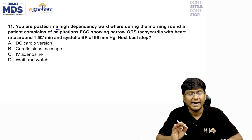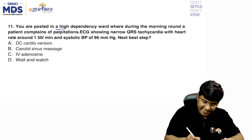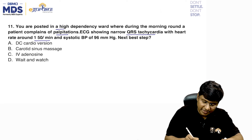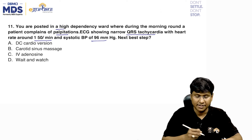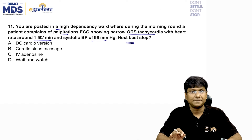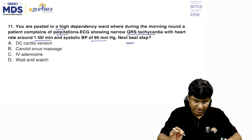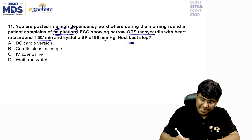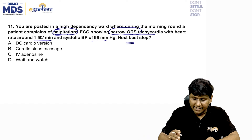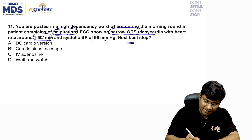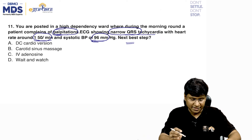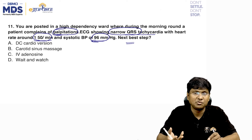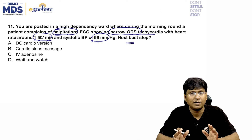Next question: a patient in a high dependency ward complains of palpitations. ECG shows narrow QRS tachycardia with heart rate around 150 beats per minute and systolic blood pressure is 96 mmHg. What is the next best step? This is a scenario of supraventricular tachycardia (SVT) or paroxysmal SVT, evidenced by narrow QRS complex tachycardia.